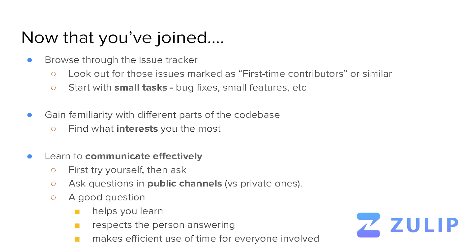Another key area to focus on is communicating effectively, especially when asking questions in the community chat. Some tips: first, try to debug the issue yourself before asking on the channel. It's also preferred to ask on a public channel instead of a private one, because you'll get a better and faster answer since many people can read your chat, and your questions benefit others as well. Lastly, formulating a good question is somewhat important and tricky — it's something I continue to improve on today. A good question helps you learn, it respects the person answering, and it makes the best use of everybody's time.